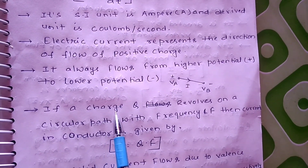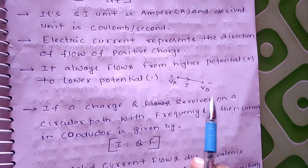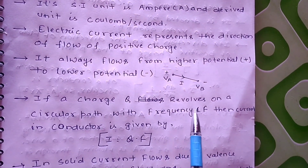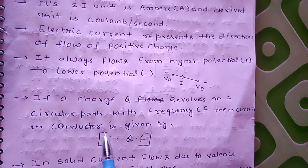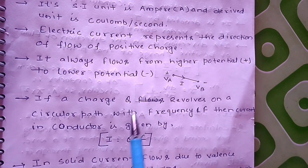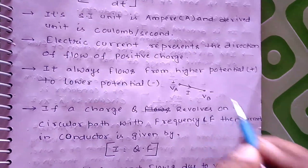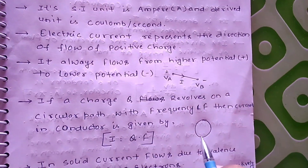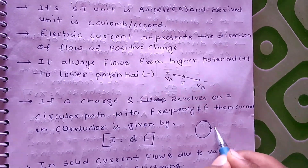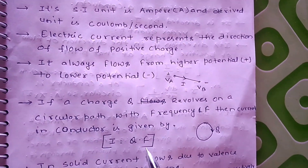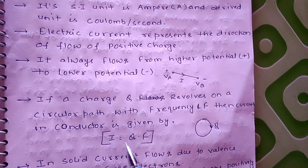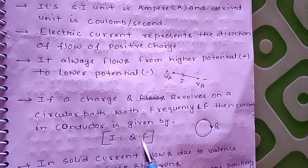If a charge q revolves on a circular path with frequency f, then the current in the conductor is given by I = q into f, that is, charge multiplied by frequency.